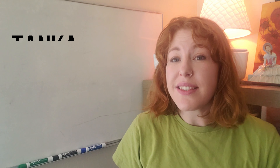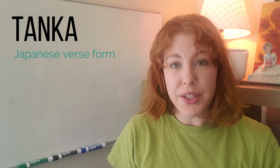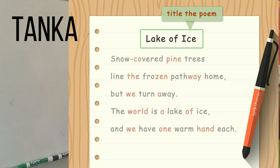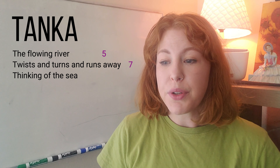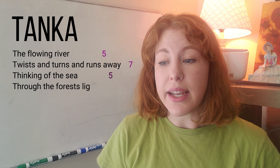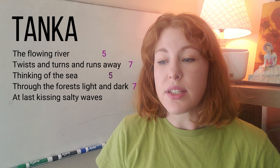The next format is known as tanka. Tanka is a Japanese form of verse, like haiku, except additional lines are added. The first and third lines of tanka contain five syllables, and the second, fourth, and fifth lines contain seven syllables, for a total of five lines. Here is an example: "The flowing river twists and turns and runs away, thinking of the sea, through the forests light and dark, at last kissing salty waves."